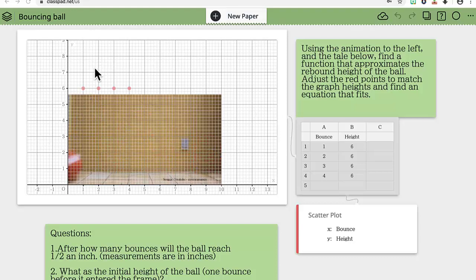Look at two activities that have just been added to the lesson library. The first one is called the bouncing ball, trying to fit an approximate rebound. So we're trying to figure out what the rebound is. This is going to be an exponential decay.